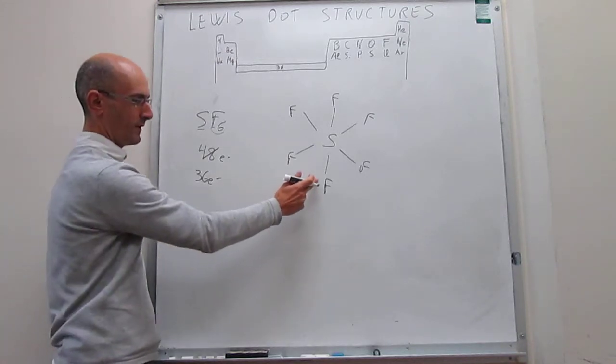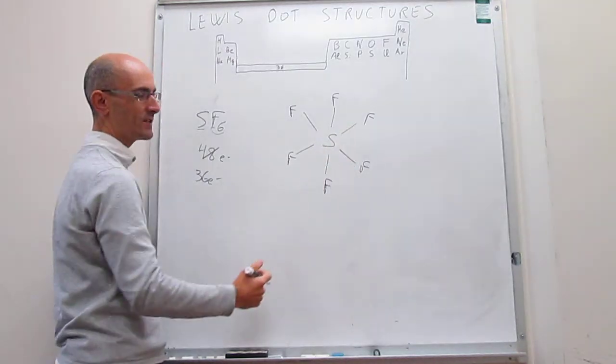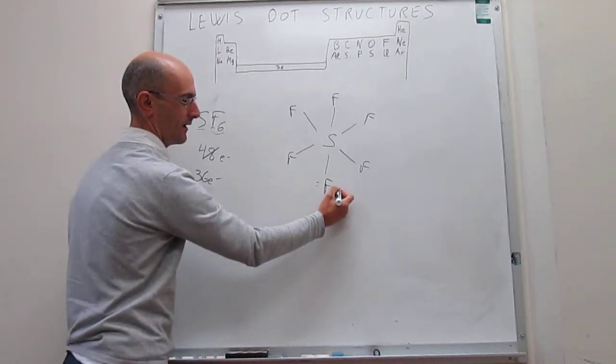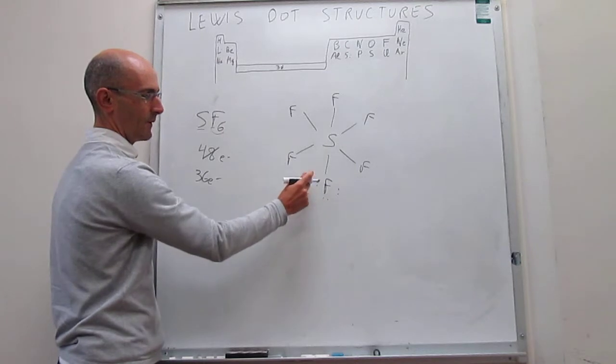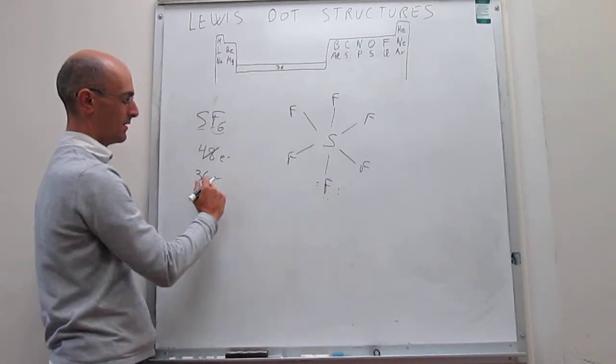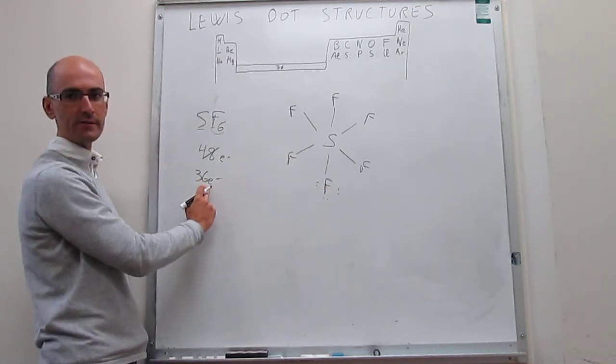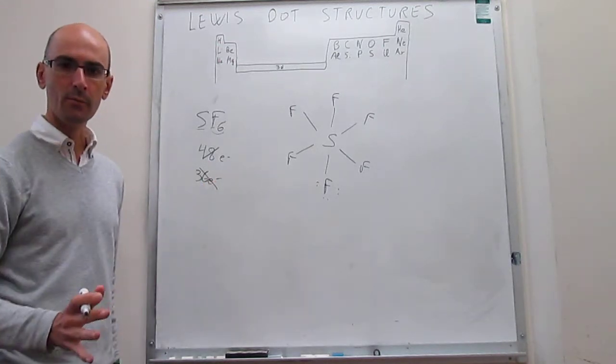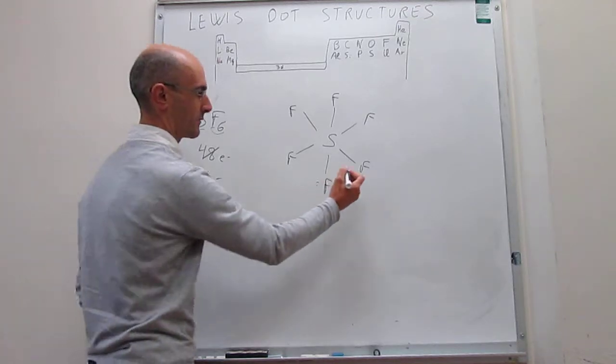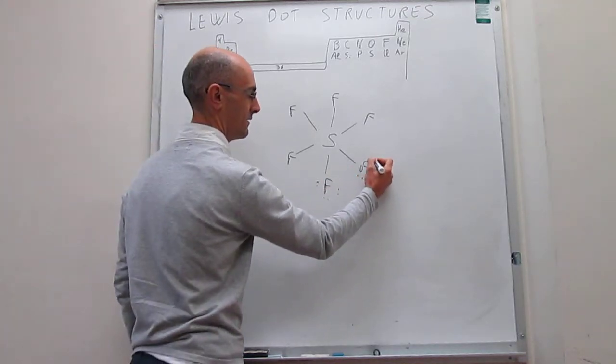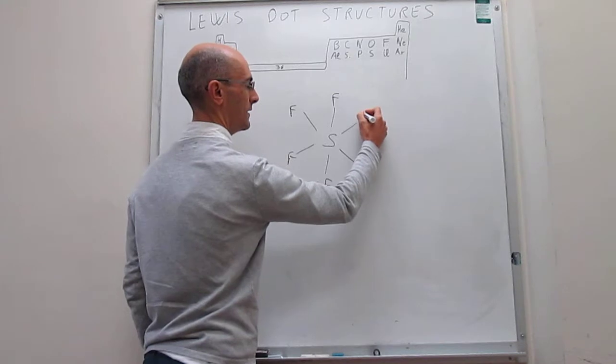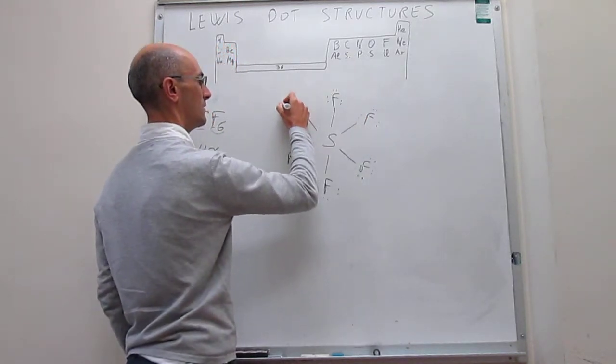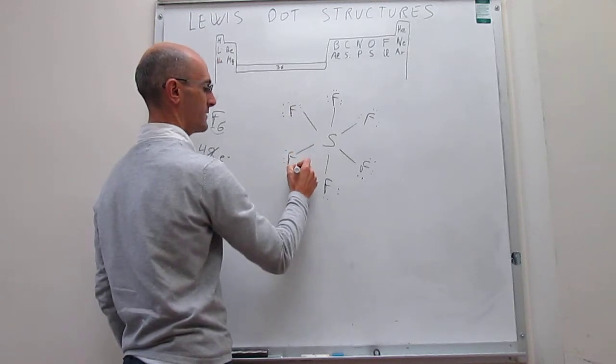We will put the lone pairs around the fluorine atoms first. And notice something interesting that will happen is that we can put 6 electrons around each fluorine atom, and because we have 6 fluorine atoms, we'll have a total of 36 electrons. That means after putting lone pairs, we will actually be completely done with our valence electrons. So 36, 12, 18, 24, 30, 36.